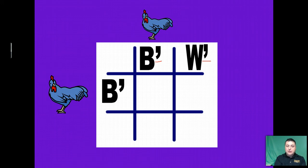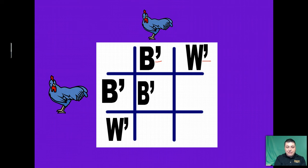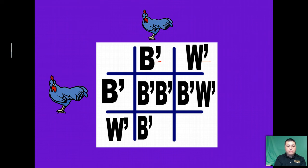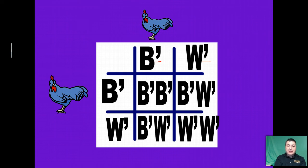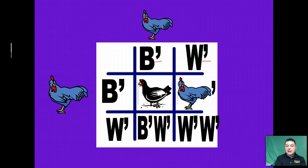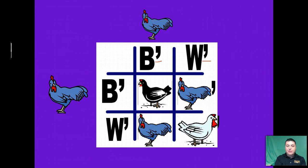Here's another blue Andalusian, and when they mate, we're going to get a homozygous black, two blues, and one homozygous white — so we'll get our black Andalusian, our blues, and then our white.